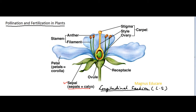This is the female portion, known as the carpel. In biology, female is denoted in a specific way. In the female portion of the flowering plant, we find the stigma, which is sticky in nature. This neck-type structure is known as the style, and the oval structure is the ovary. In the ovary, we find some integuments, some openings, and these go inside the ovule.